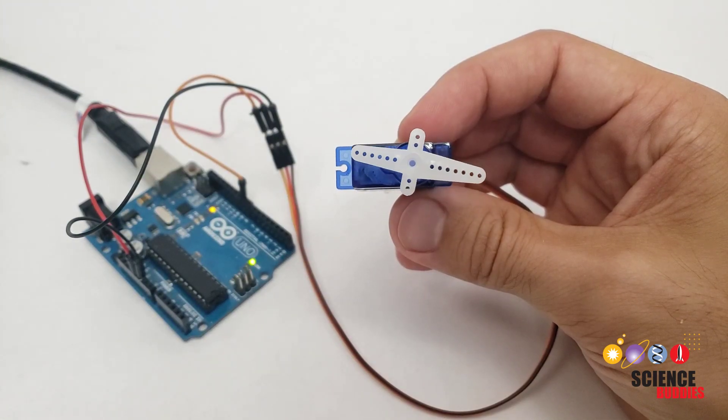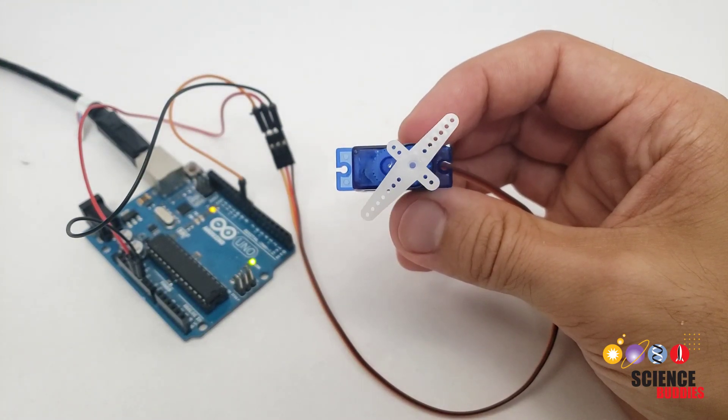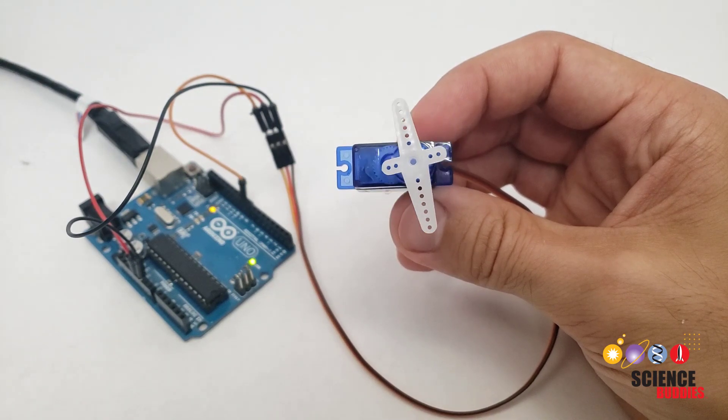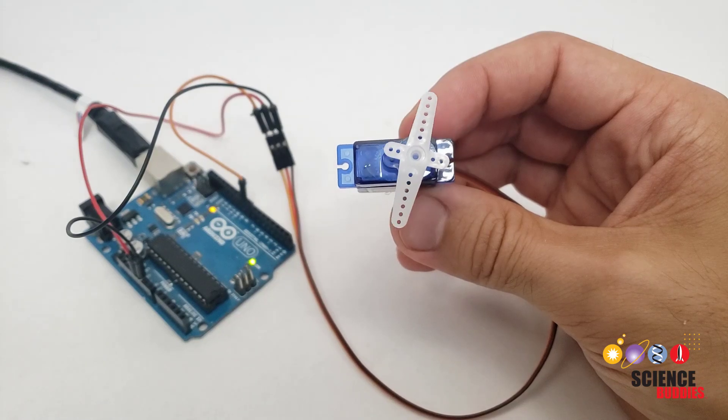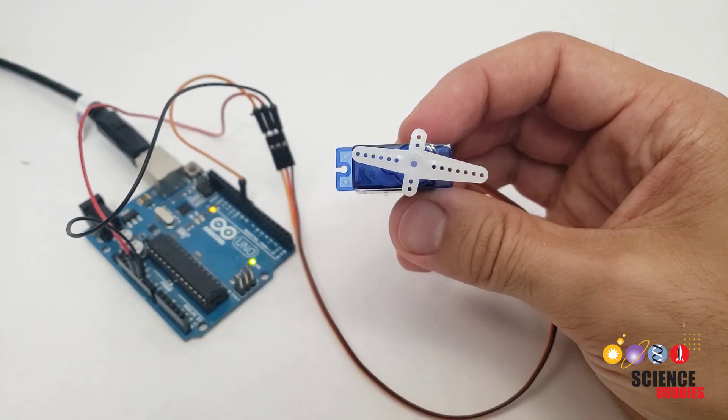Now, as you can see, this physical servo does not have an actual range of 180 degrees. It looks like maybe it's more like 160 or 170. So, not all servos might have a true range of the full 180 degrees.